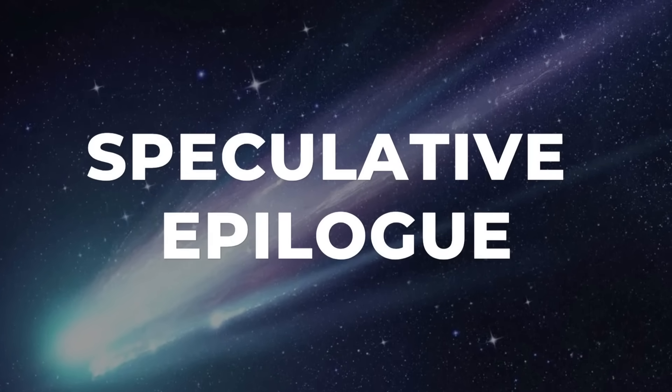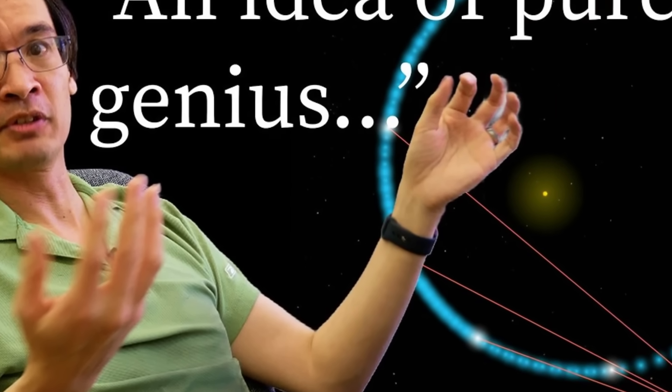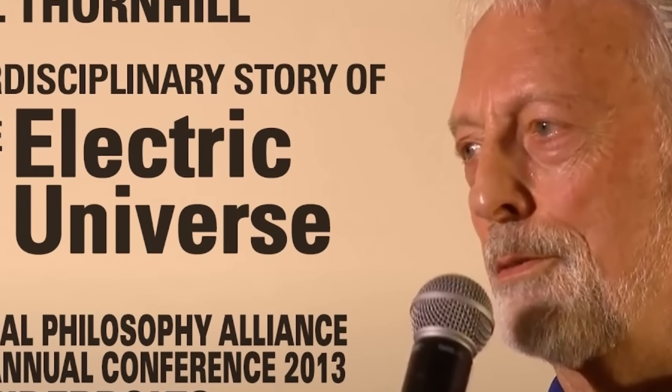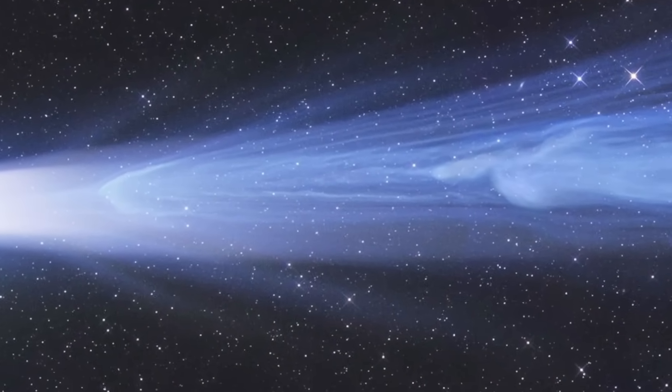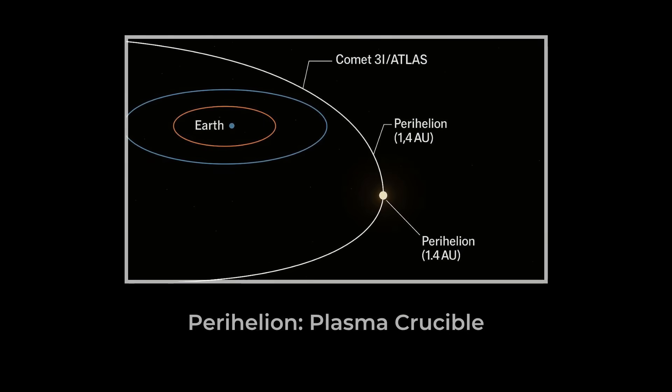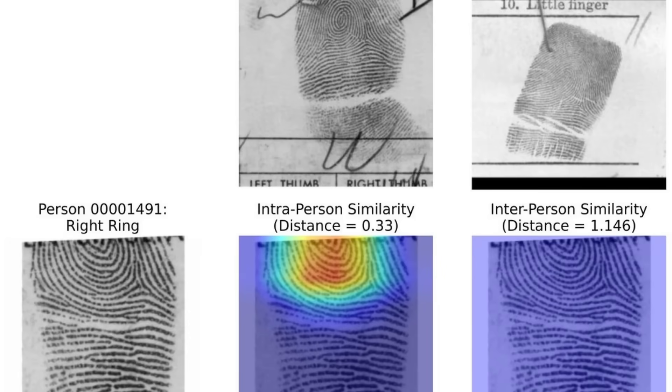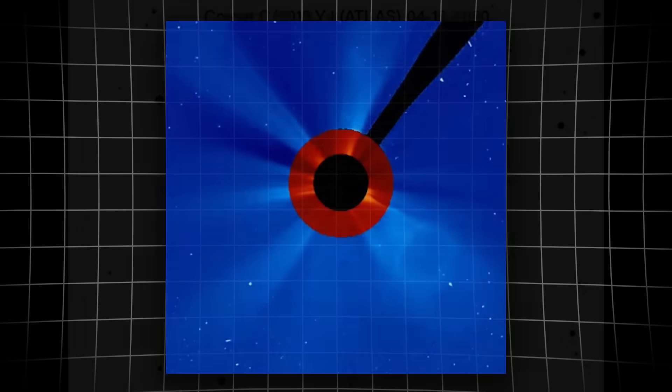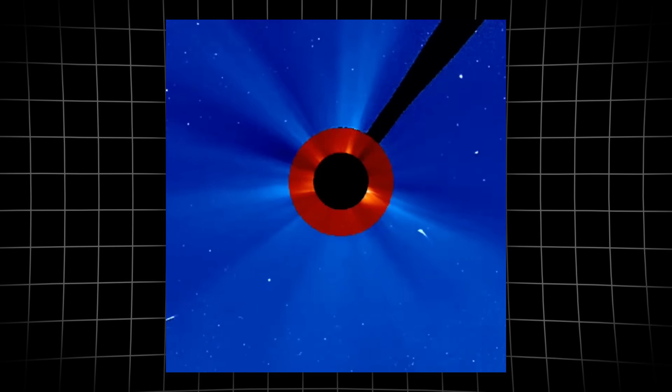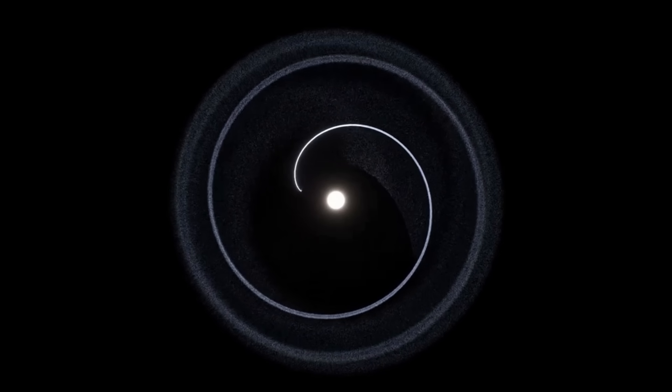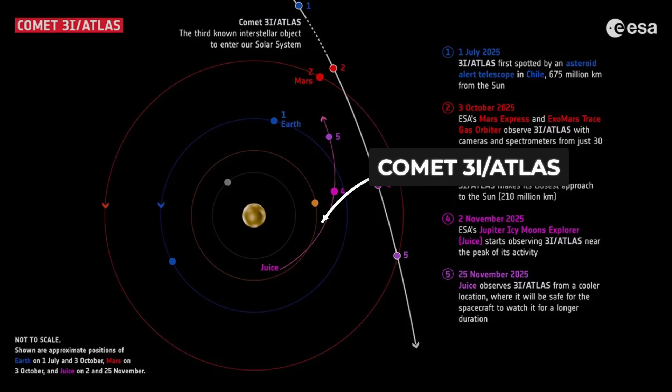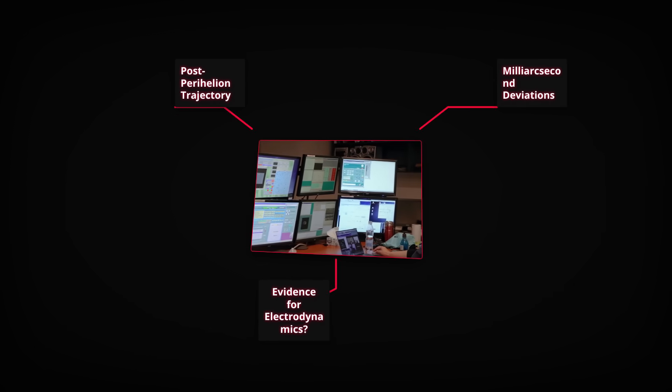The moment 3i-Atlas swings closest to the Sun, a new set of questions comes into sharp focus—questions that stretch beyond standard cometary models. Among the most vocal are advocates for electromagnetic explanations, the so-called electric universe theorists, who argue that comets are not just icy relics but dynamic players in the solar plasma environment. For them, perihelion is more than a gravitational checkpoint. It's a natural laboratory where the solar wind, electric fields, and charged dust could interact in ways that leave measurable fingerprints. One hypothesis on the table: a sudden outburst of activity, triggered not by heat alone, but by the object's plunge through regions of intense electromagnetic flux. If the coma's carbon dioxide-rich dust is electrically charged, the Sun's field could accelerate particles, alter the coma's shape, or even shift the trajectory by a detectable margin—effects that would show up as small but real deviations in post-perihelion tracking.